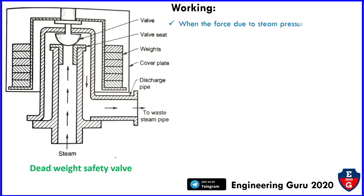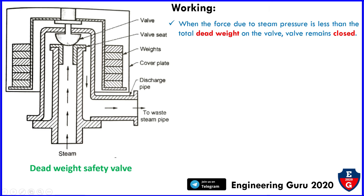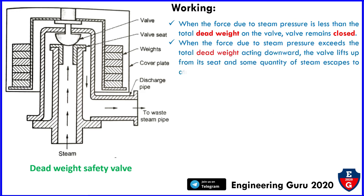Now we will see the working of the dead weight safety valve. When the force due to steam pressure is less than the total dead weight on the valve, the valve remains closed — as we can see in the figure, when pressure is less than the dead weight, the valve is closed. When the force due to steam pressure exceeds the total dead weight acting downward, the valve lifts up from its seat and some quantity of steam escapes to the atmosphere through the pipe. We can see the steam: when the steam pressure exceeds the dead weight, the valve lifts up like this.